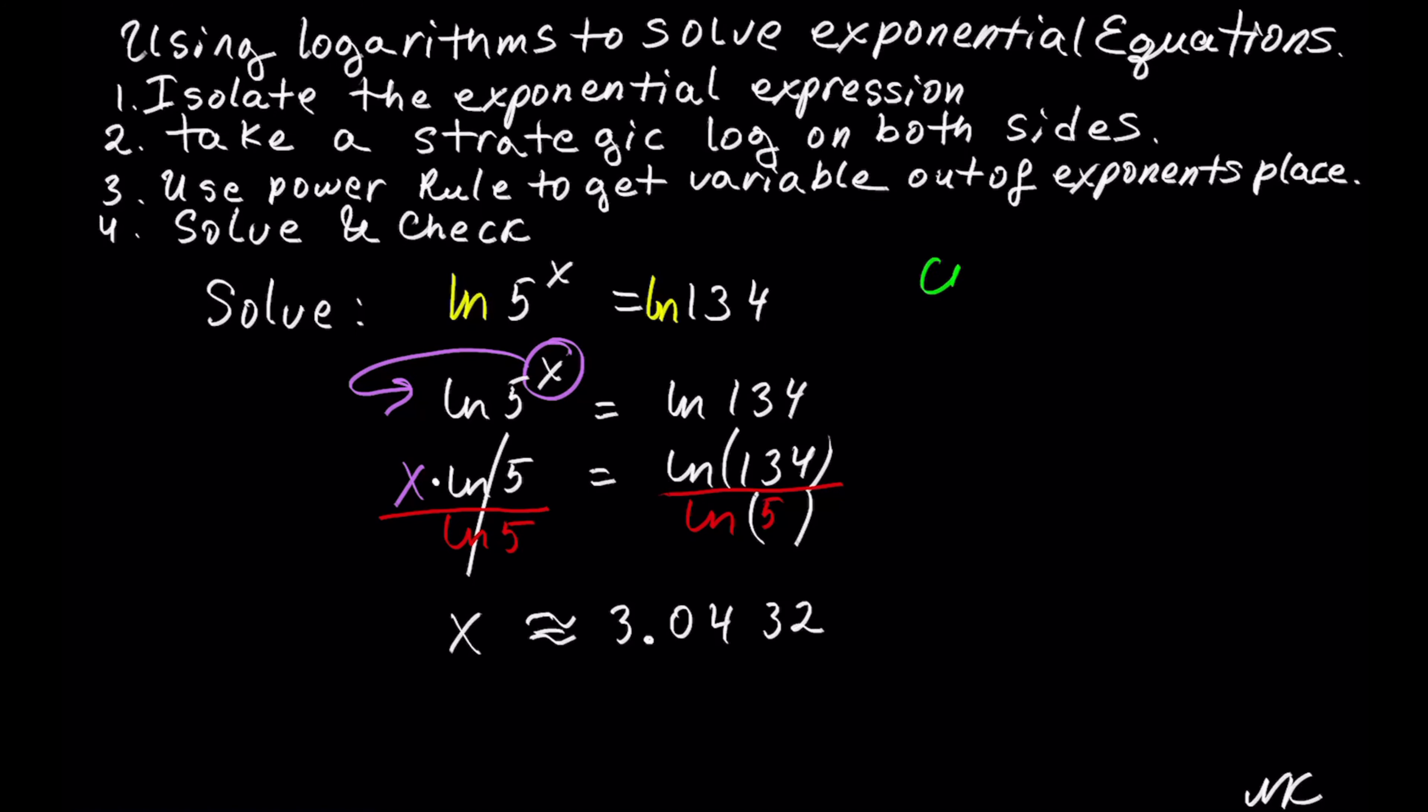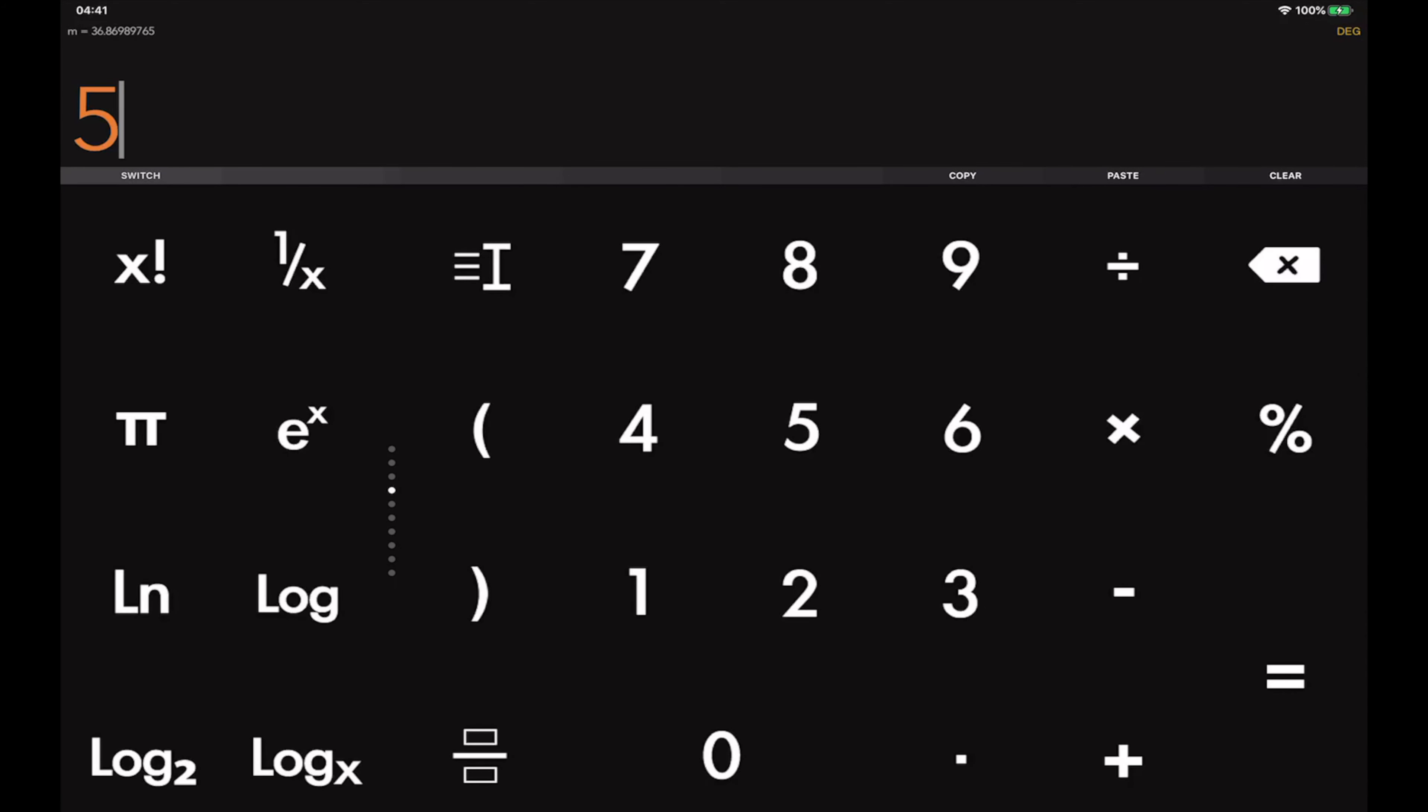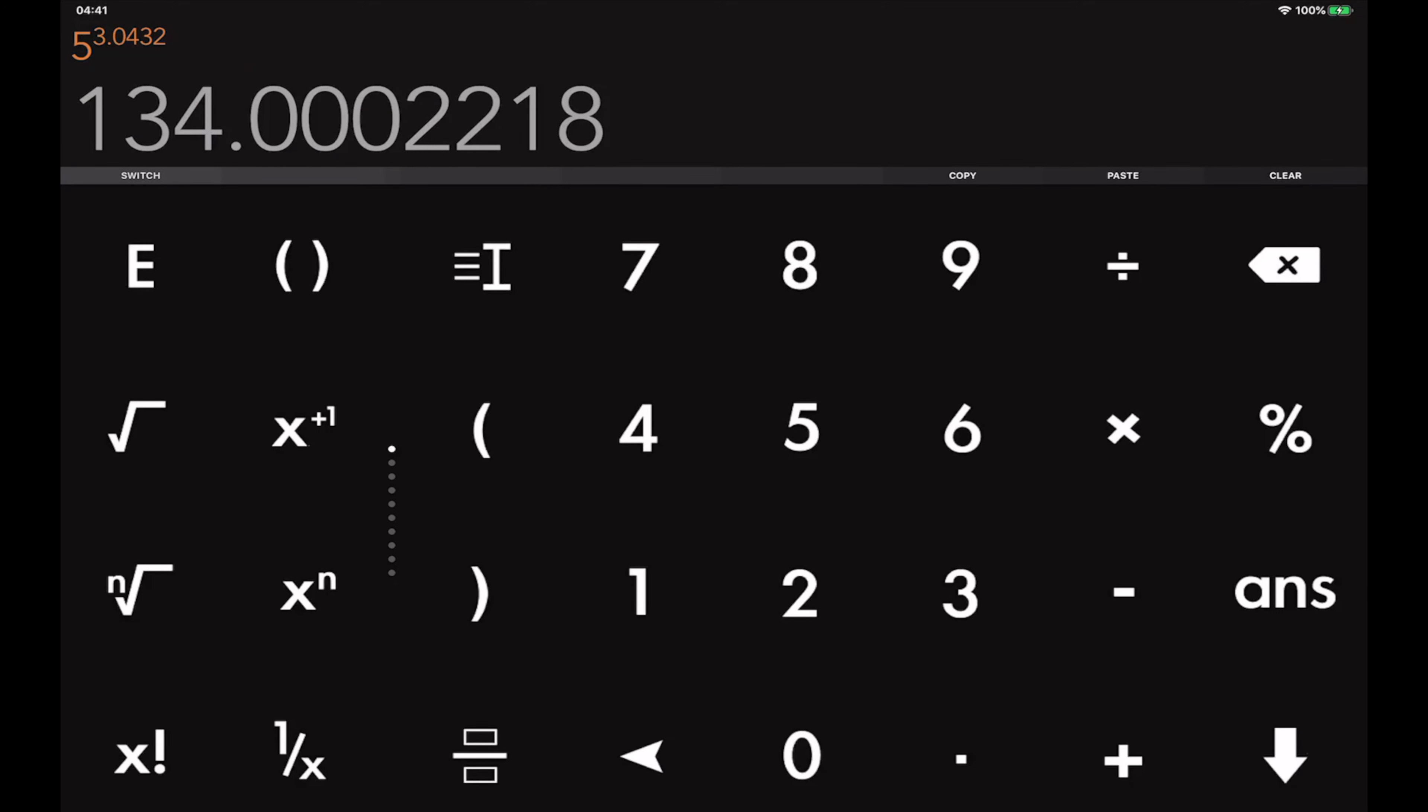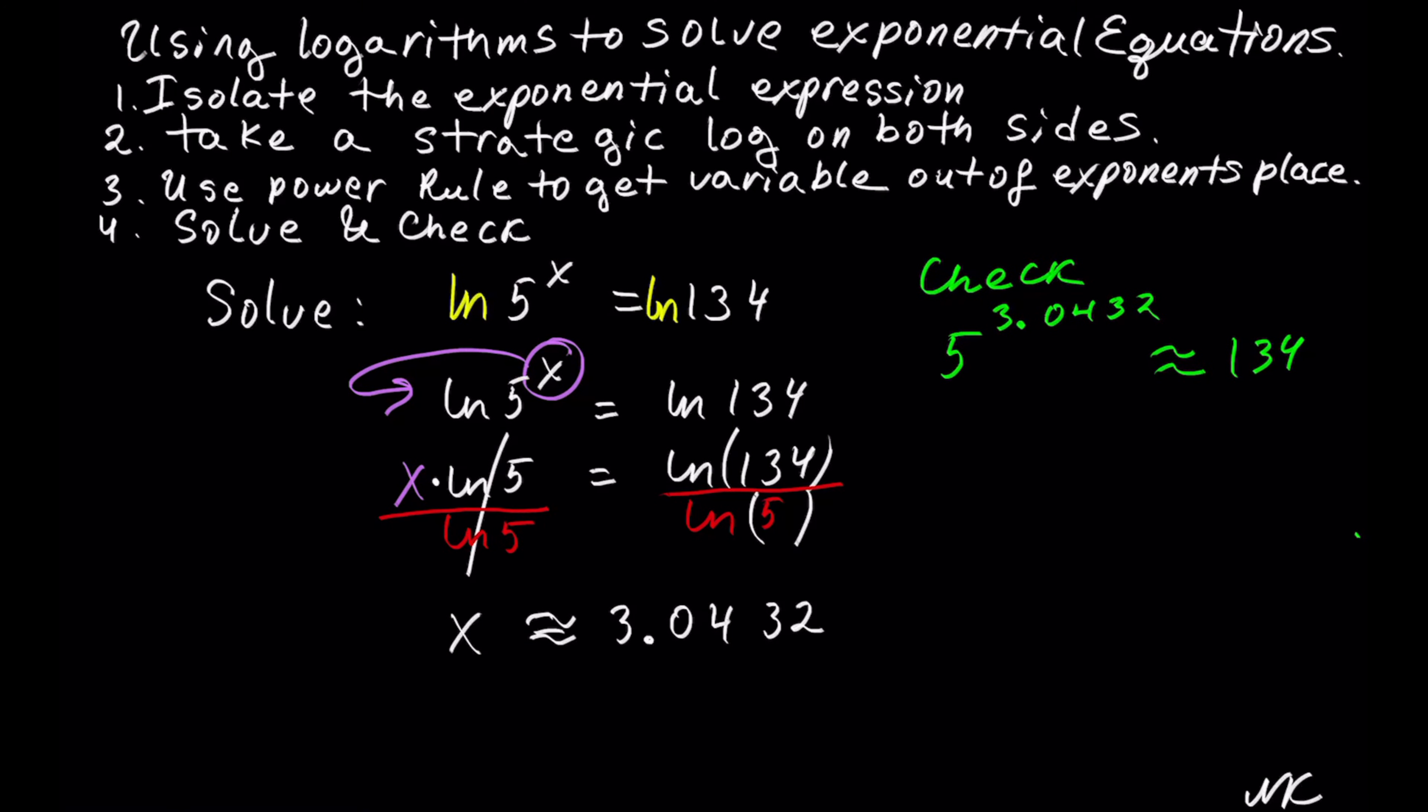To check, let's see if 5 raised to the 3.0432 is approximately 134. So 5 to the 3.0432 equals 134 if we round it off to the whole numbers. Since this is a true statement, x equals 3.0432 is our solution. That's all.